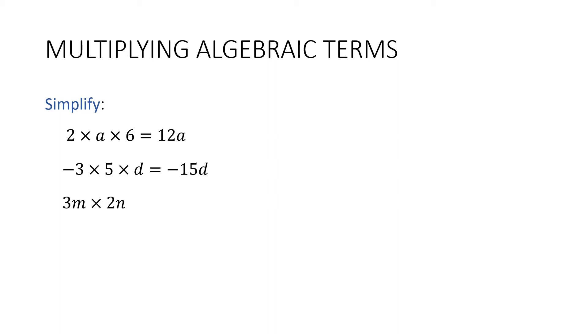3m times 2n. Remember this is 3 lots of m multiplied by 2 lots of n. So it's okay to do 3 times 2, which is 6. And then I'm going to have mn on the end.